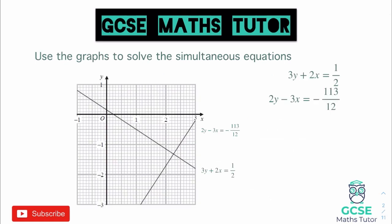This next question looks horrendous because the equations look really nasty, but it isn't actually that bad. Both equations are labeled on the graph. It's literally just finding the point at which they intersect. However, this one is not on a whole number coordinate, so we are going to have to read it as accurately as we can. The best way to do this is to get a ruler and pencil and draw a nice straight line up from the intersection point to read the x coordinate.